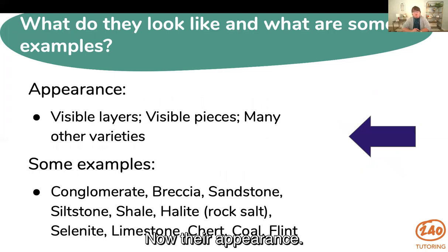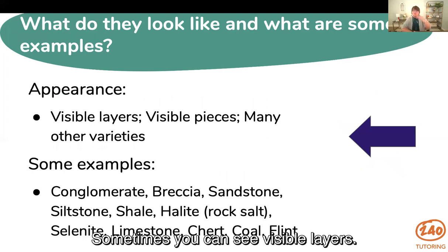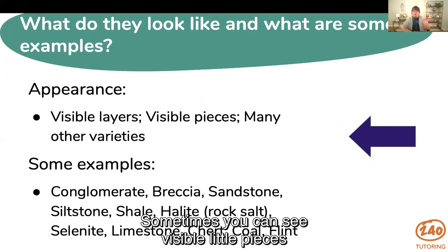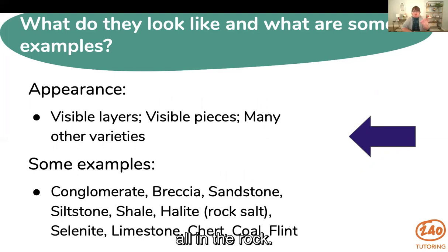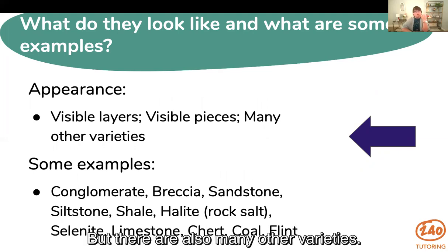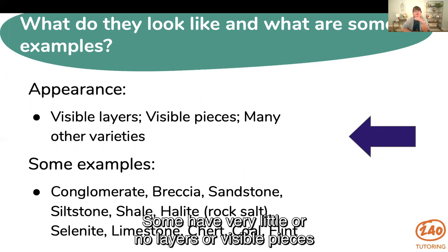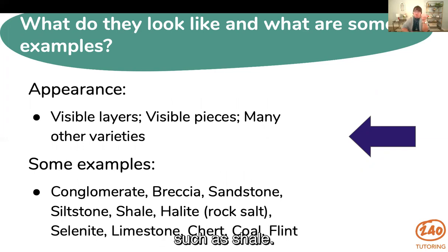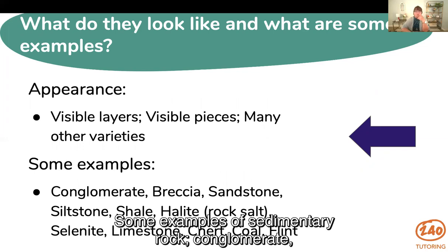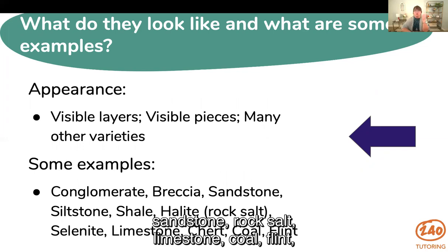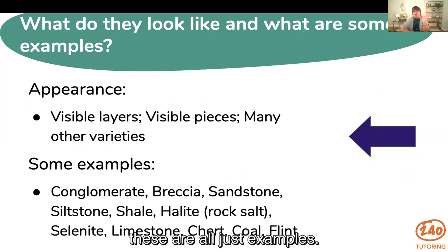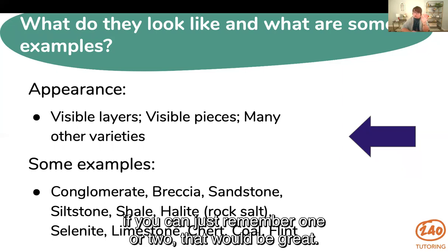As for their appearance: sometimes you can see visible layers, and sometimes you can see visible little pieces all in the rock. But there are many other varieties — some have very little or no layers or visible pieces, such as shale. Some examples of sedimentary rocks are conglomerates, sandstone, rock salt, limestone, coal, and flint. These are just examples — don't try to memorize the whole list. If you can remember one or two, that would be great.